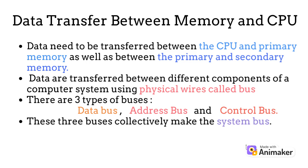As we know, the data needs to be transferred between the CPU and primary memory, as well as between the primary and secondary memory. Data are transferred between different components of a computer system using physical wires called bus. There are three types of buses: data bus, address bus, and control bus. These three buses collectively make the system bus.